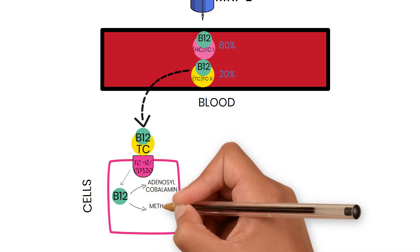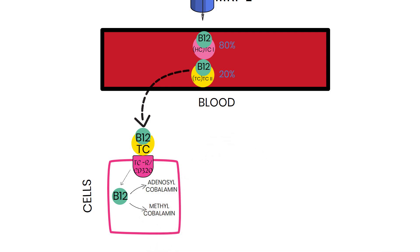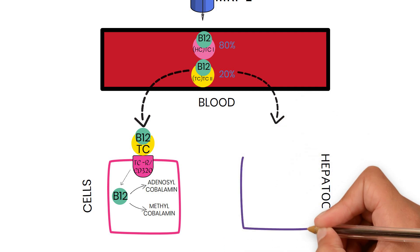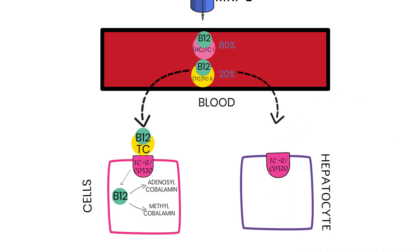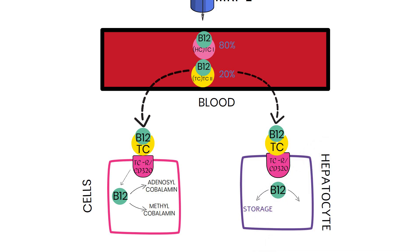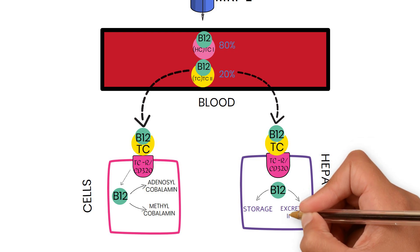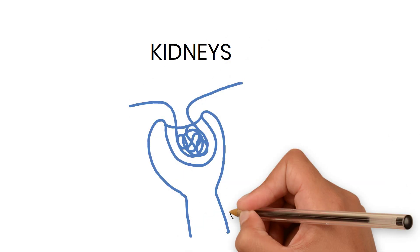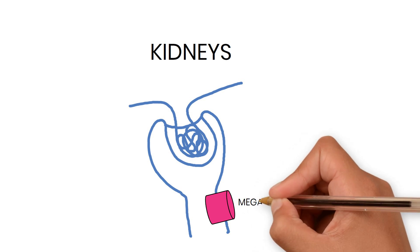In a similar manner, transcobalamin transports B12 to hepatocytes, and inside B12 is either stored or excreted in bile. Finally, in kidneys, B12 uptake is by receptor called megalin, present on proximal tubular cells.